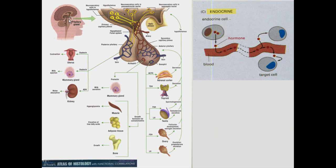The pituitary gland is one of the major glands, located at the base of the brain, facilitating the neuroendocrine system. In the hypothalamus, neurons produce releasing factors that enter a portal system going to the pars distalis. We have target cells in the hypothalamus producing releasing factors that travel through portal vessels to the pars distalis. From the pars distalis, there are three types of cells: acidophils, basophils, and chromophobes.